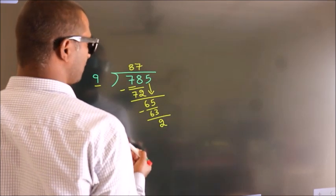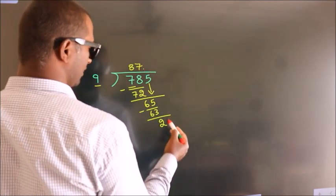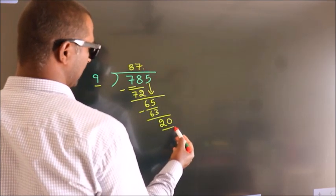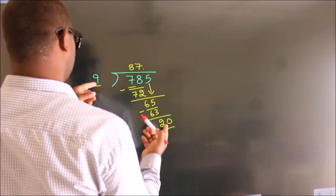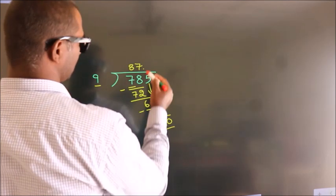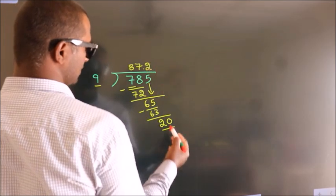So what we do is put a dot and take 0, so 20. A number close to 20 in the 9 table is 9 times 2, which is 18.